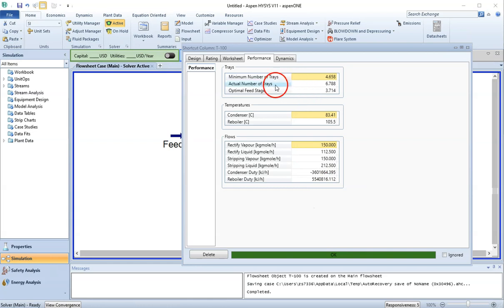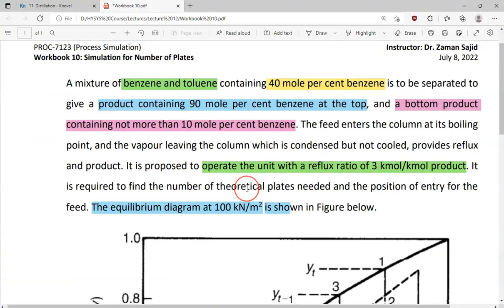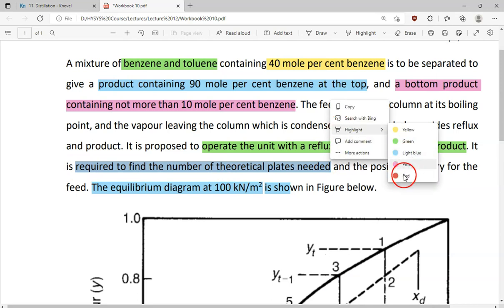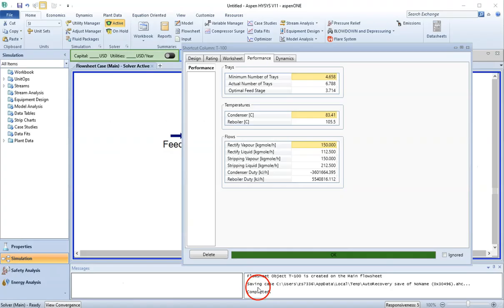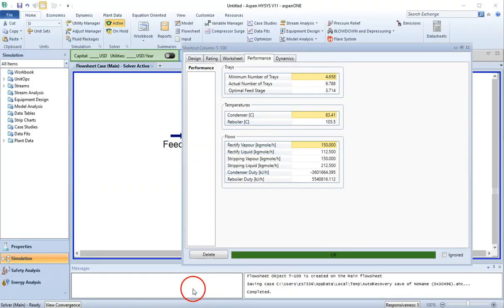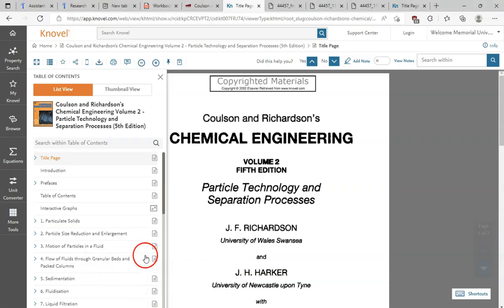According to my statement here, we were required to find the total number of theoretical plates. So this total number of theoretical plates will be 7. This is our answer: 6.78, which means 7 plates. The feed is entering at the 4th plate because it is 3.7, which is the 4th. This was our answer to the position of the entry of the feed. So we have done with this. Our result is we are needing 7 plates for this distillation system.